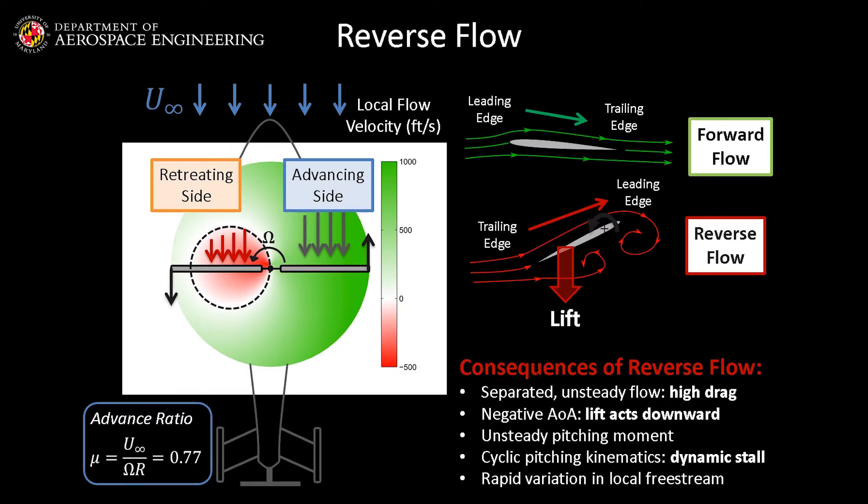Reverse flow happens on the retreating side of a rotor disc, where the flow travels from the trailing edge, the back of the airfoil, to the leading edge, the front of the airfoil, and that's backwards. As we are looking to make these high-speed helicopters, this reverse flow becomes a real problem.